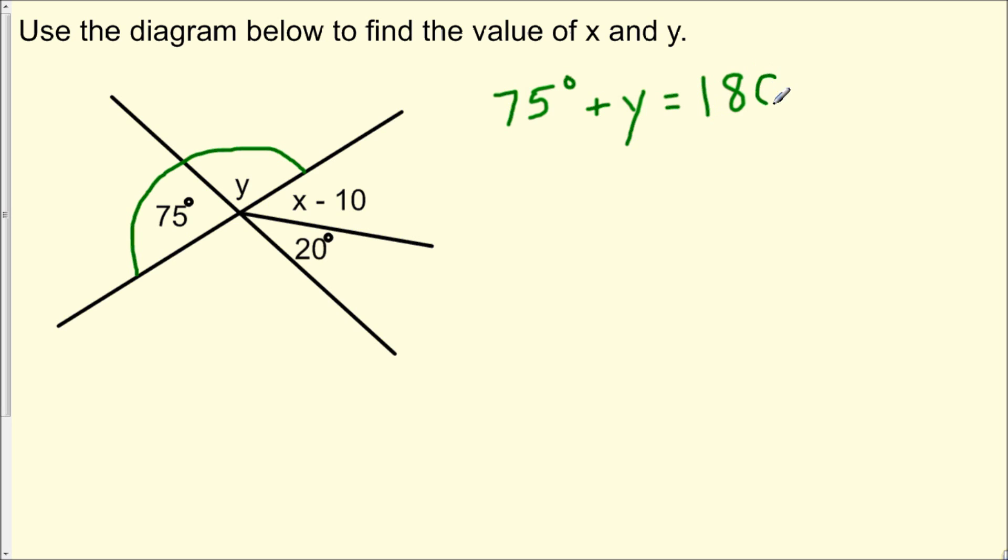And now once again, the reason we could set up this equation is this 75 degree angle and this angle y, together, both form a straight line. And the measure of a straight angle is 180 degrees.